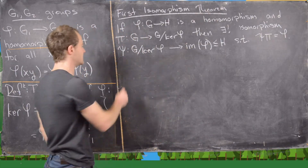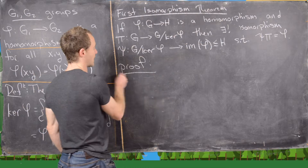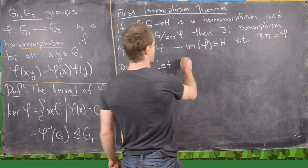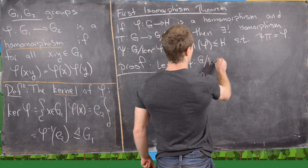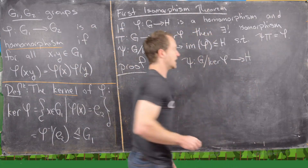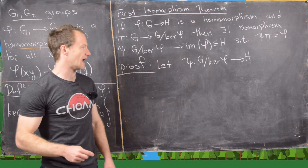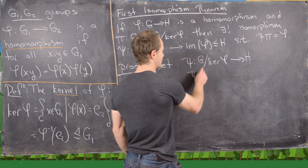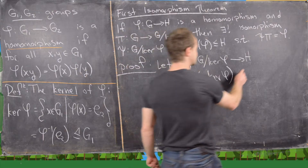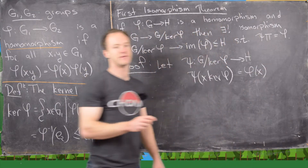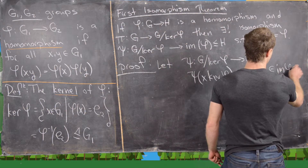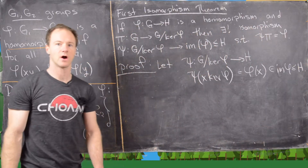Motivated by the picture, we define psi as a map from G mod ker(phi) to the image of phi in H, given by: psi of the coset x·ker(phi) equals phi of x. Notice this output is an element of the image of phi, which is a subgroup of H.